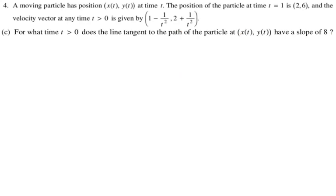Let's take a look at the next one. For what time t greater than 0 does the line tangent to the path of the particle have a slope of 8? So you have to demonstrate your knowledge of how dy dx is related to dy dt and dx dt. So dy dx is going to be, it's the chain rule is one way to think of it, or just memorize it, dy dt divided by dx dt.